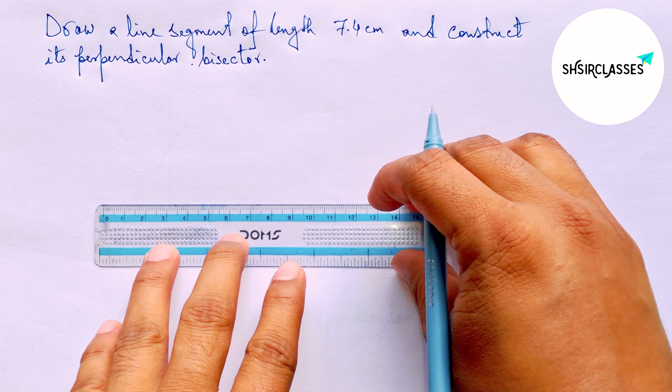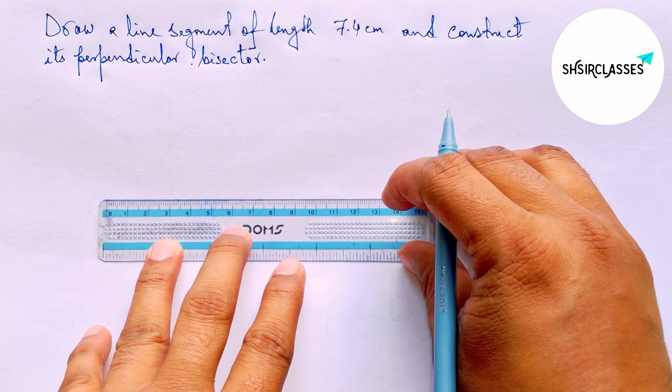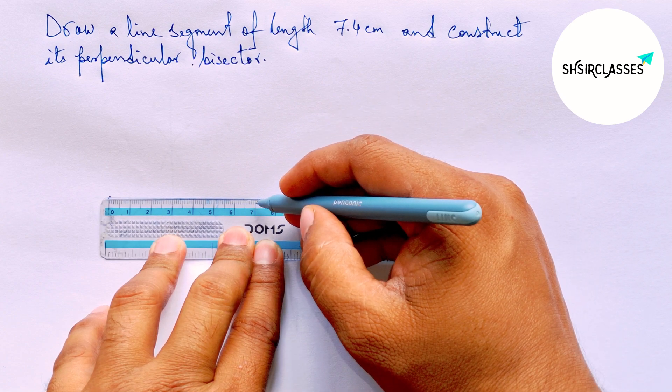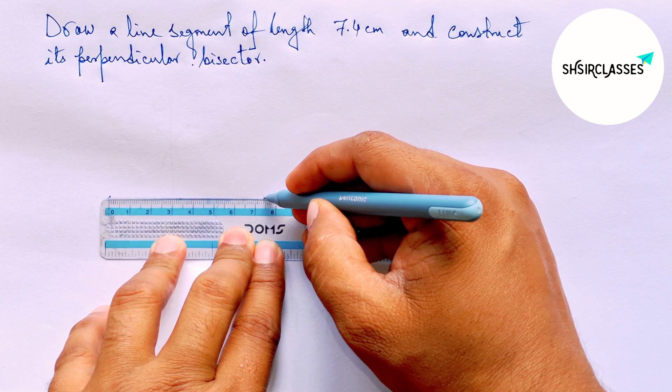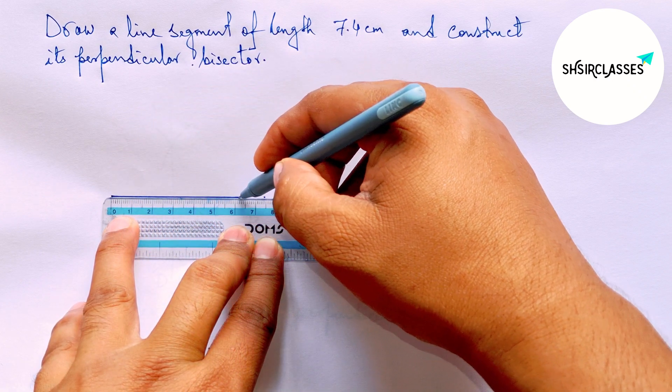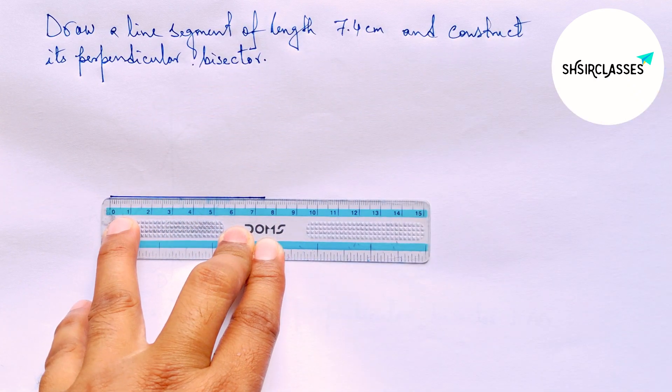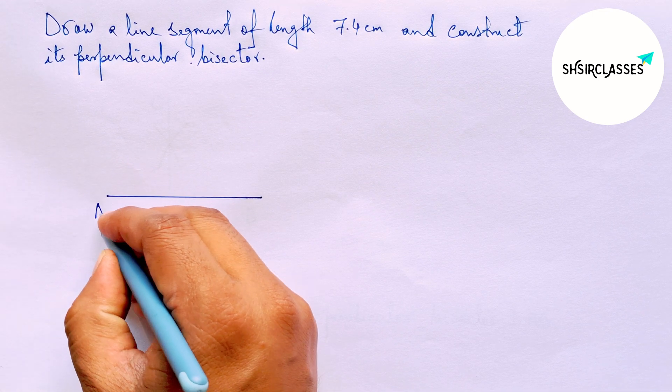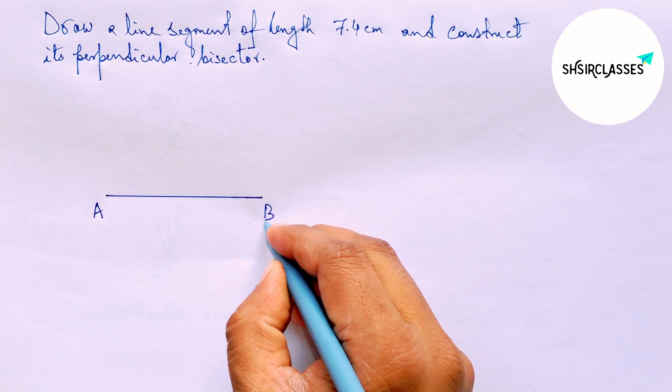First of all, let us draw here a line segment of length 7.4 centimeter. So here 7 and counting 4. So 7.4 centimeter. This is a 7.4 centimeter line segment. Now labeling here A and B.